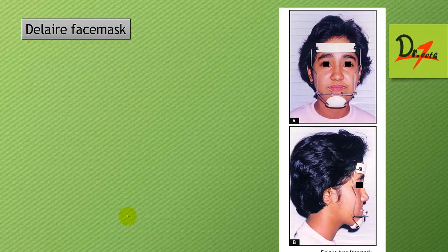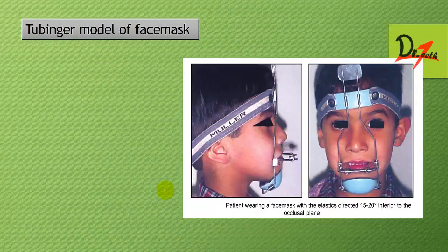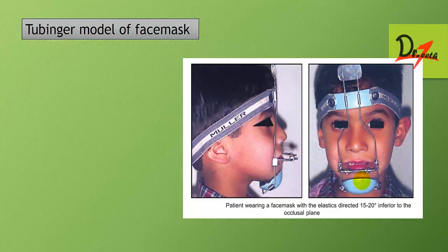The Diller face mask is made up of a rigid square-shaped metal framework that connects the chin cup to the forehead pad, with a wire for elastic attachment. The Tübinger model is a modified version with a forehead cap and chin cup connected by two midline metal rods, and an adjustable crossbar in front of the mouth to engage the elastics.